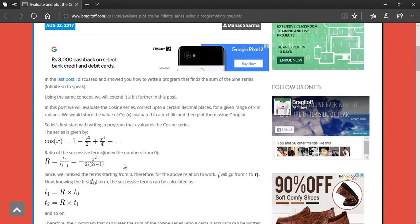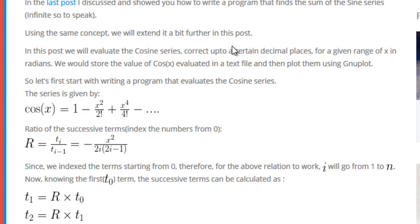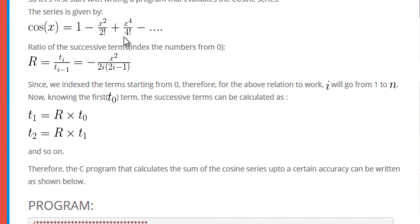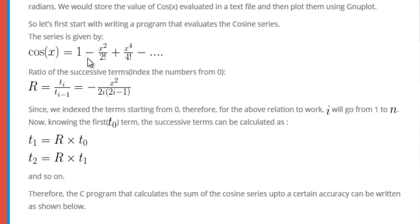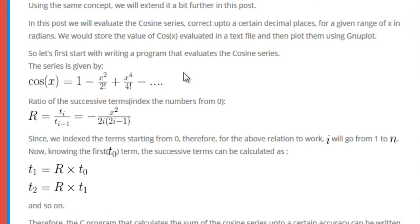If you are familiar with mathematics, you know that functions like cosine, exponential, tangent, log, etc. can be expanded in terms of a series. The cosine series expansion is: 1 minus x squared over 2 factorial, plus x to the power 4 over 4 factorial, minus x to the power 6 over 6 factorial, and so on.